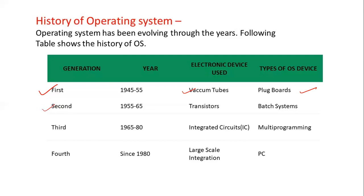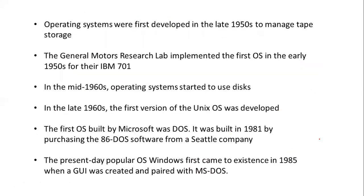The second generation used transistors and batch systems. The third generation is from 1965 to 1980 — the electronic device used was integrated circuits, and the type of operating system was multi-programming. In the fourth generation, from 1980s onwards, the electronic device used was large-scale integration, and the type of operating system device is the PC.